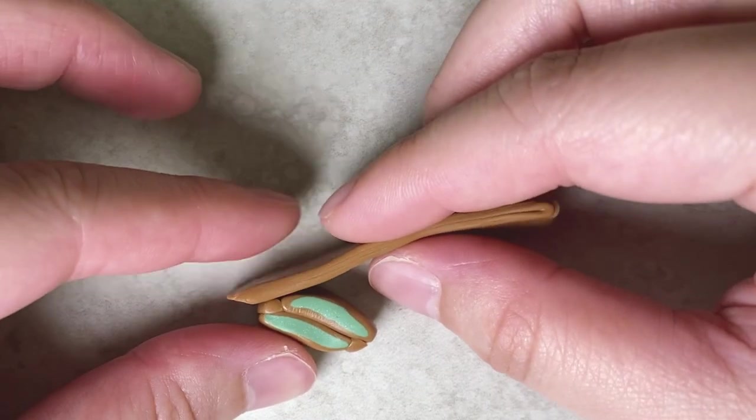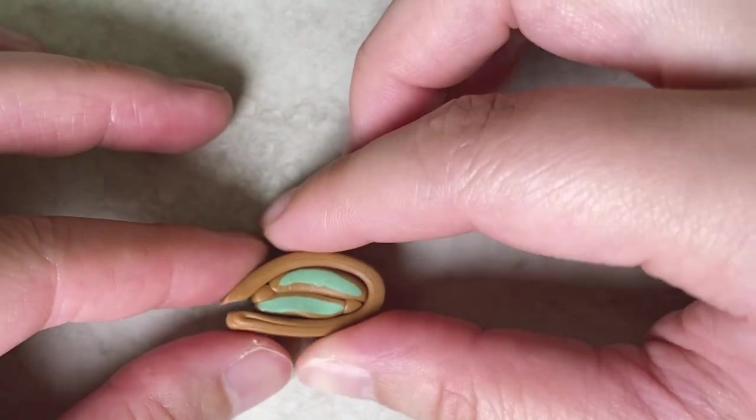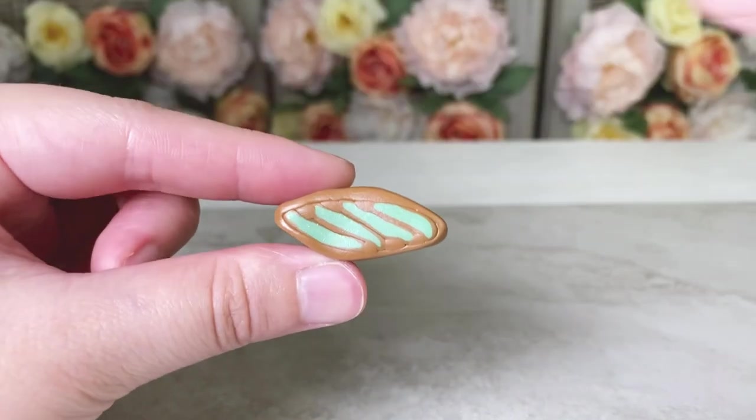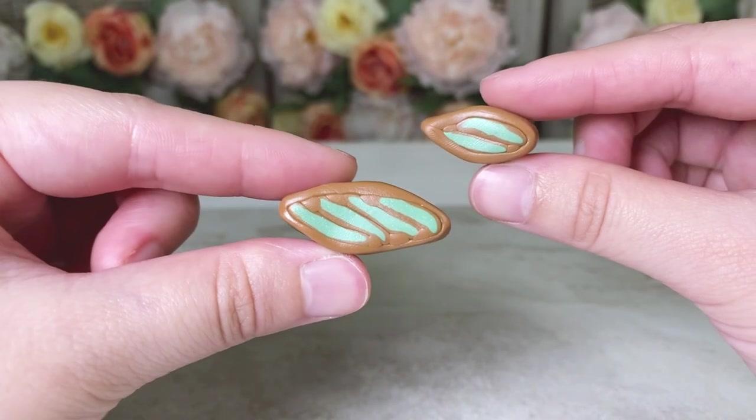Lastly, do the same thing for the small wing. Wrap it with a thick brown layer of clay. About 5 grams of brown clay was used for both additional borders.